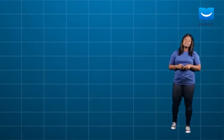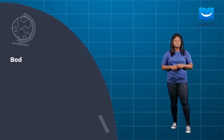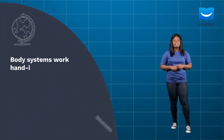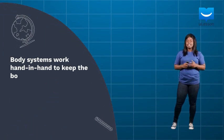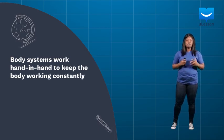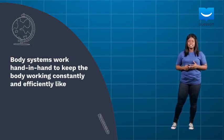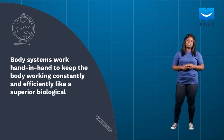You see, the human body is a complex structure of several systems. These systems work hand-in-hand to keep the body working constantly and efficiently, like a superior biological engine.